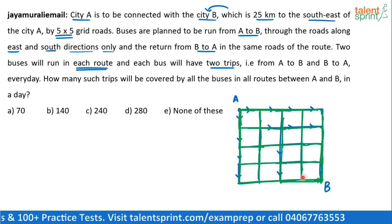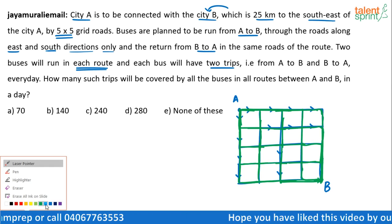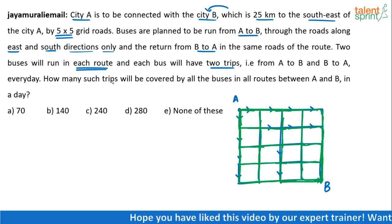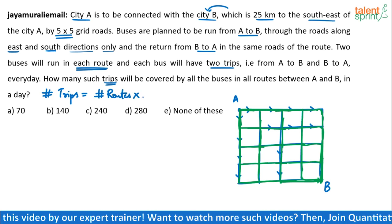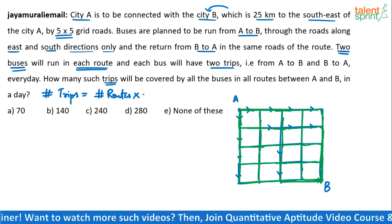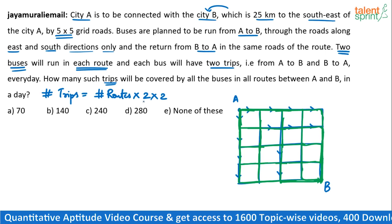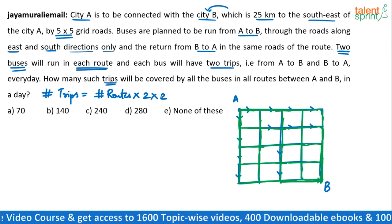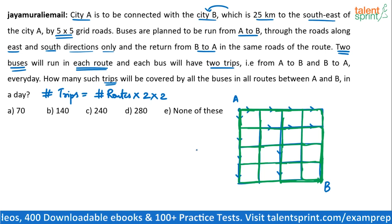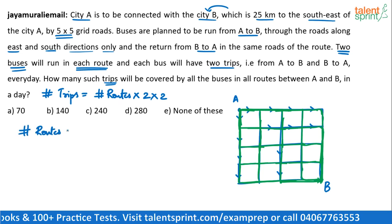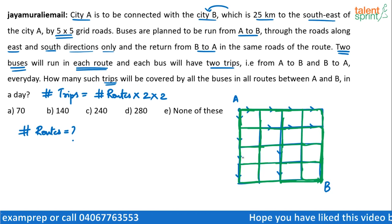All these are different routes. The final answer requires finding the number of trips, which equals number of routes multiplied by two buses per route and two trips per bus. So total trips = number of routes × 2 × 2 = number of routes × 4. Each route has two buses, and each bus makes two trips — A to B and B to A. So your final answer depends entirely on the number of routes.